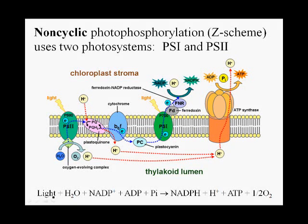Oxygenic photosynthesis depends on what we call a non-cyclic photophosphorylation scheme, sometimes called a Z-scheme. It looks very complex and we're going to try to break it down. The main thing you need to concentrate on is that there are two different photosystems: photosystem 1 shown here and photosystem 2 shown here. We're going to start with photosystem 2, because this is the pathway of electrons through these photosystems.